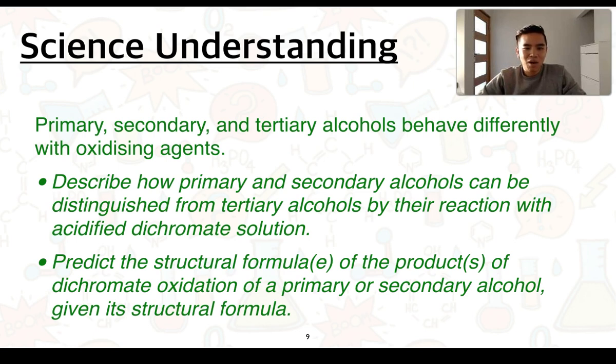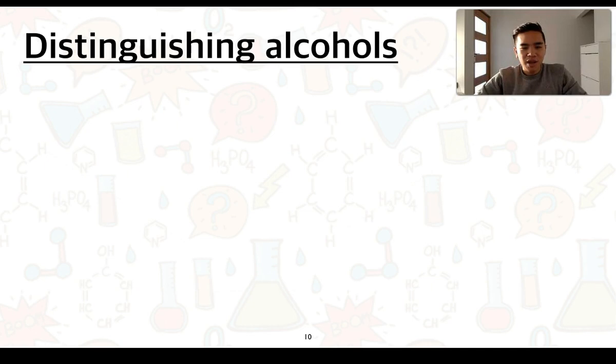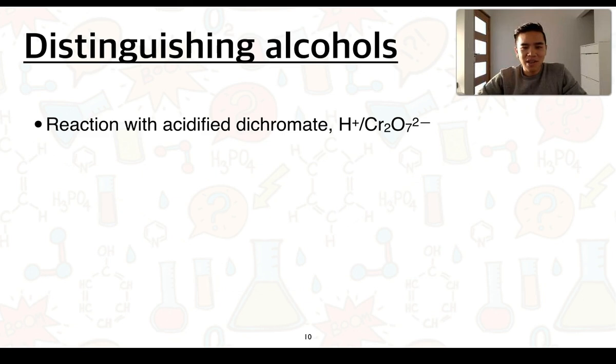We need to be able to describe how primary and secondary alcohols can be distinguished from tertiary alcohols by their reaction with acidified dichromate solution and predict the structural formula or formulae of the product or products of dichromate oxidation of a primary or secondary alcohol given its structural formula. To look at how we can distinguish between alcohols we're going to be looking at the reaction with acidified dichromate which is represented as such. So we have H+ representing the acidic component and the dichromate ion being Cr2O7^2-.